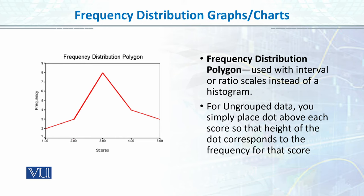For example, there are three people, roughly, with score two. And score three, almost eight people. This is the frequency. You place the frequency against dots, and then you connect those dots. This is also a good way of presenting the data. Grouped data.